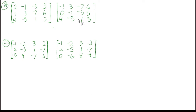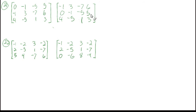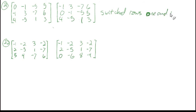Looking at the first transformation: the first thing I see is this 0 — if this were a system of equations where there was no x in one equation, I'd move it to the right spot. This row looks exactly like the first row, and this row looks exactly like the second row. All they've done is switch the position of these two rows — switch rows 1 and 2. That's all they did.